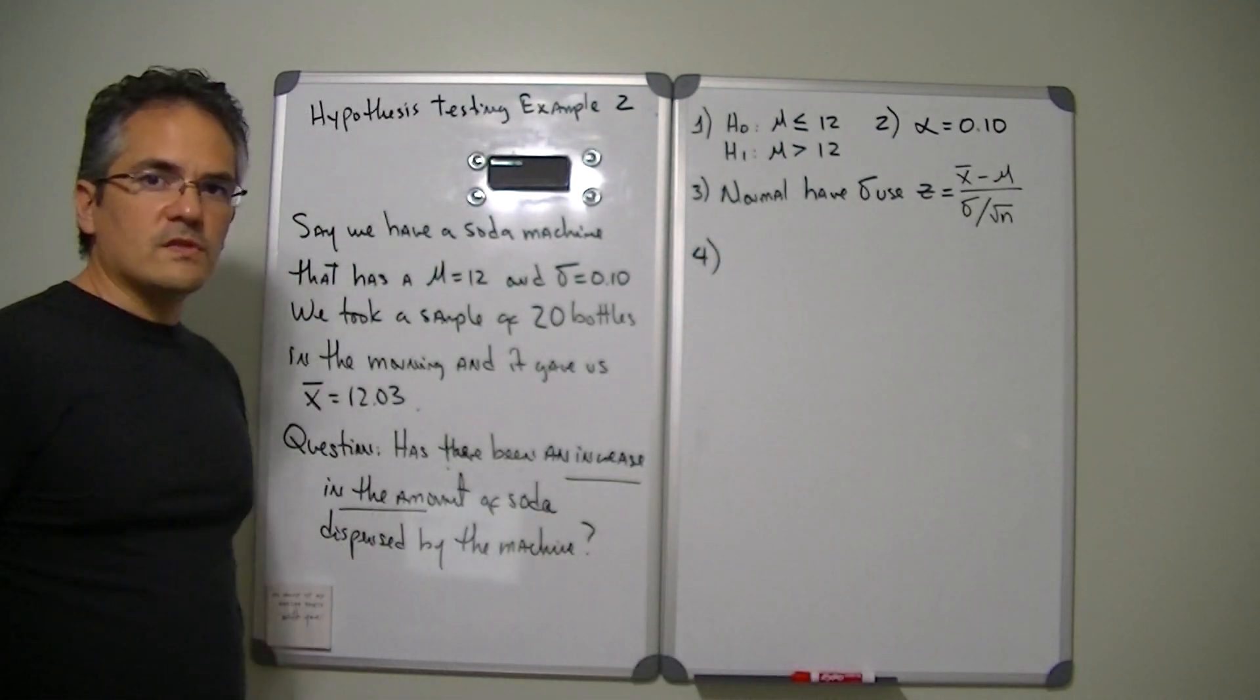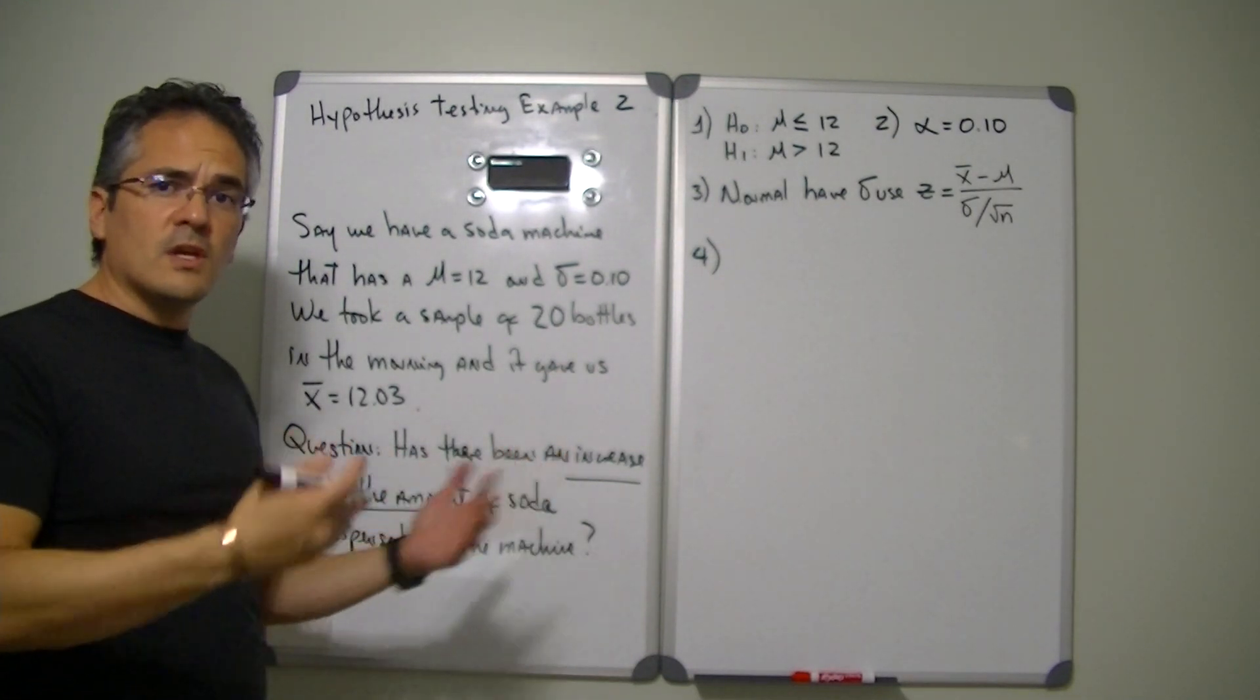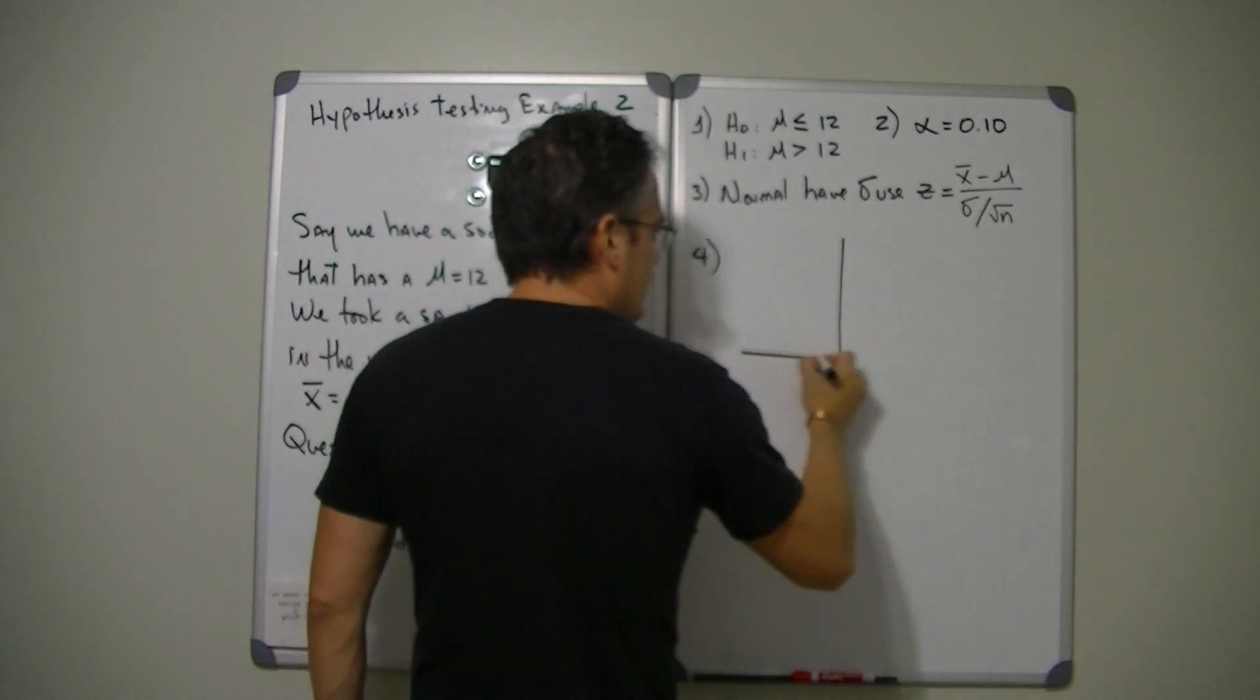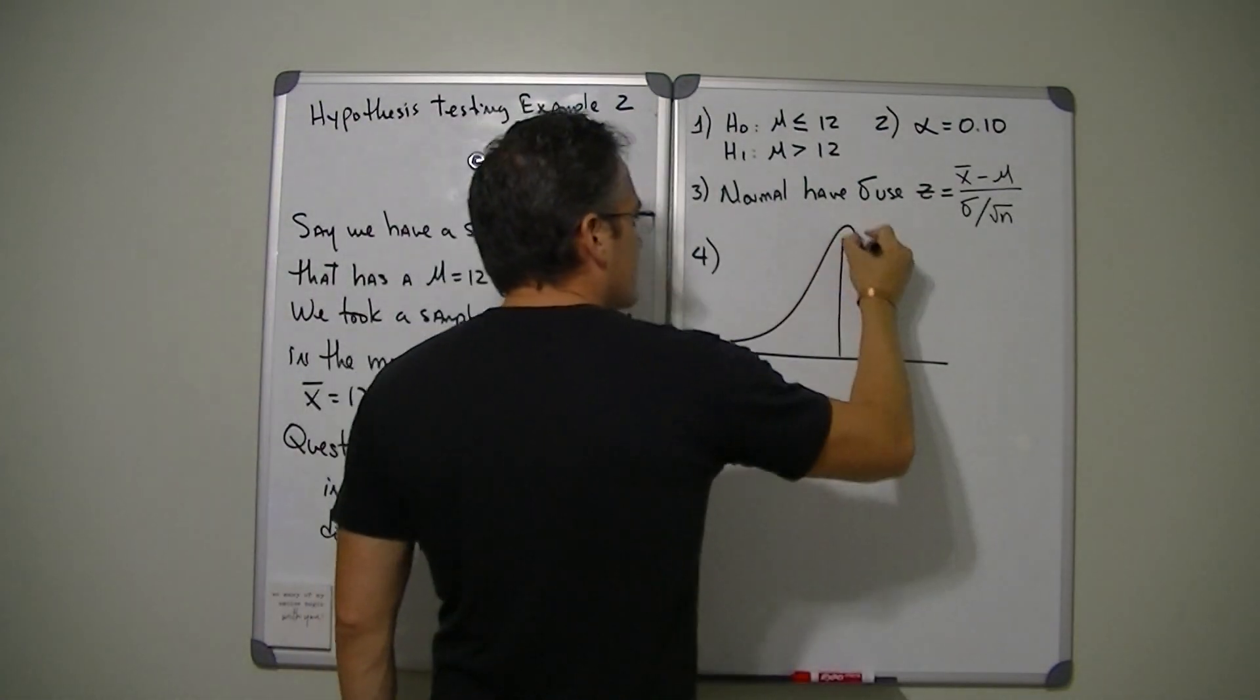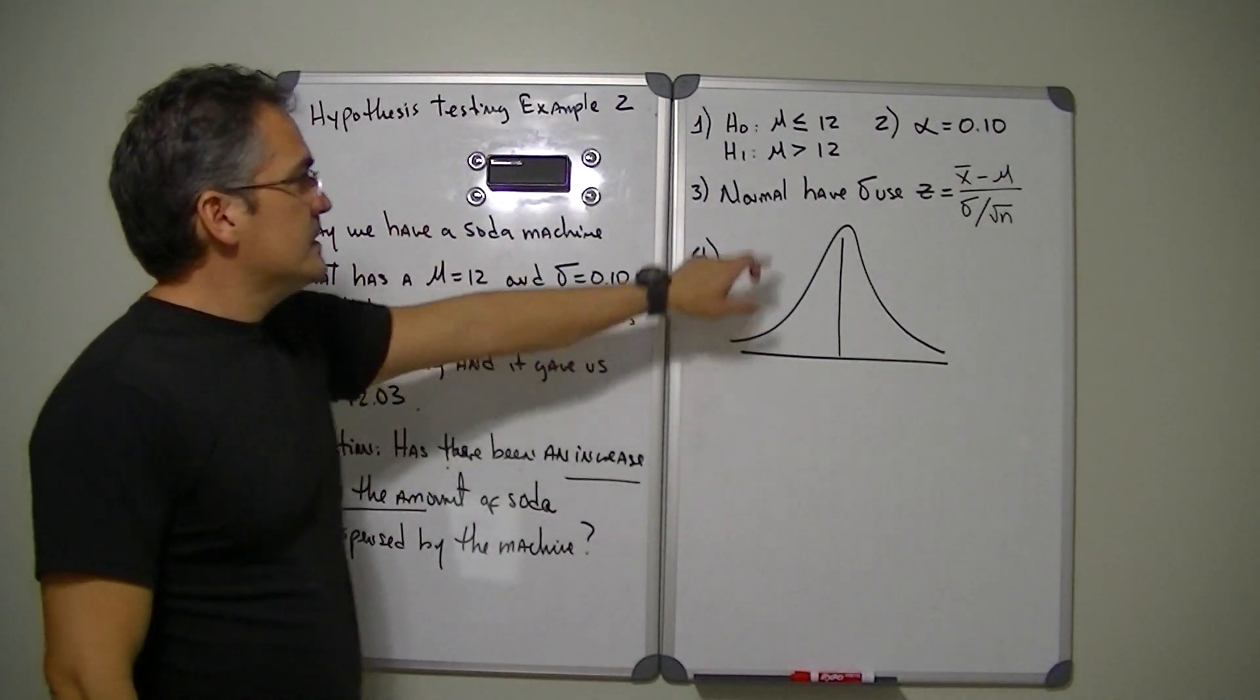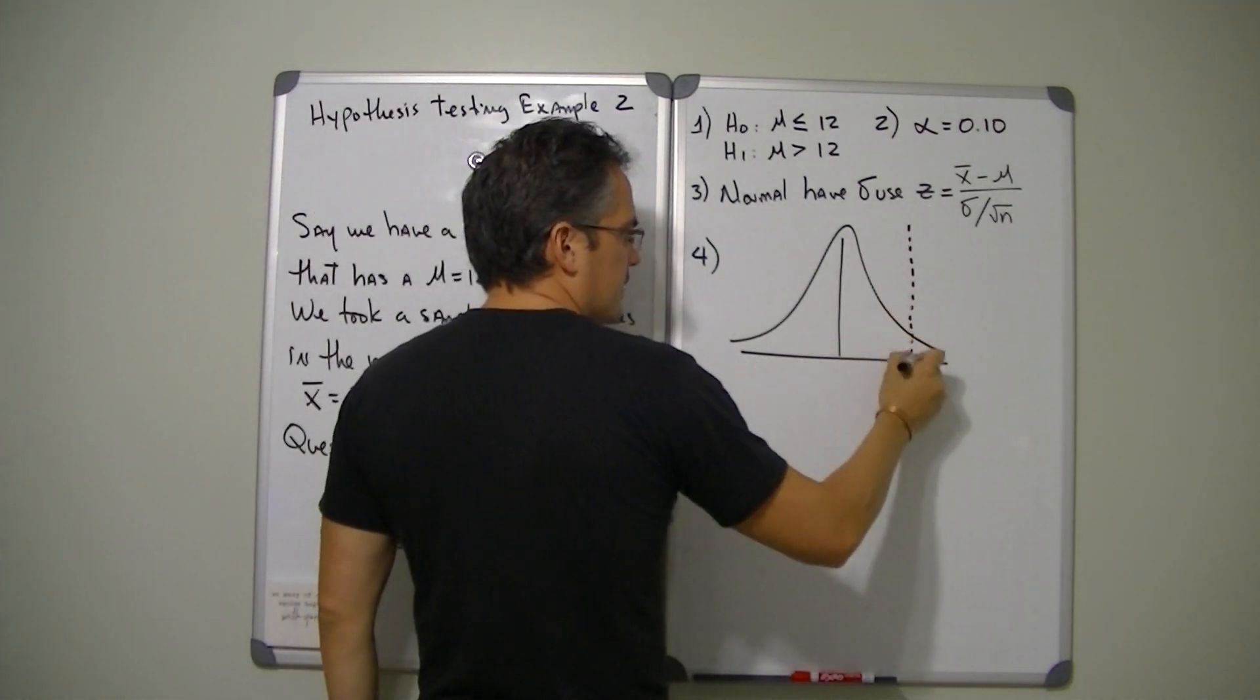Now we go to step number four. On step number four we need to set up our graph, and I like to set up the graph so that we can visualize what's going on. Once you understand how this works you don't really need to set up the graph, but I like to set it up just so that we understand what we're trying to do here. In this particular case since we have our mu greater than 12, we need to set up a rejection area to the right of the center.